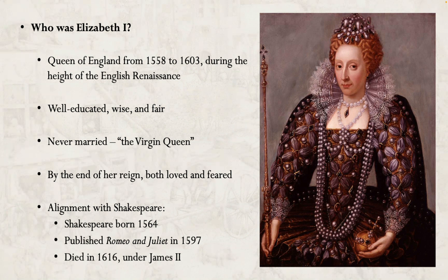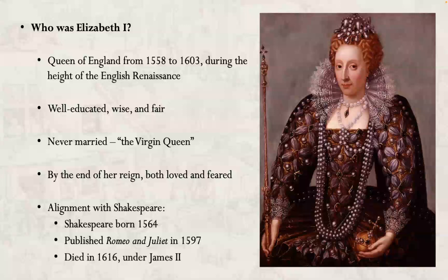She wasn't necessarily a super gentle ruler. If you ended up breaking her rules, she could punish you very ferociously. But on the whole, by the end of her reign, she was both loved and feared by the people of England. She never married, so you will occasionally see her referred to as the Virgin Queen — it's just a reference to the fact that she never had a husband. There was never a King of England during the time she was Queen.